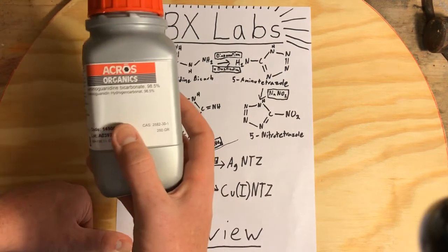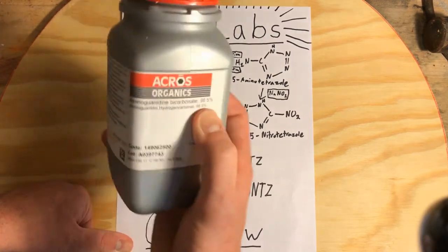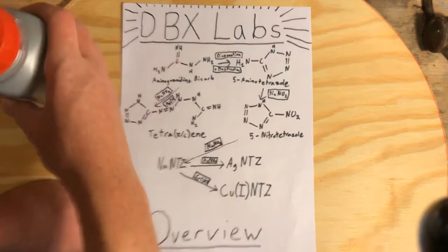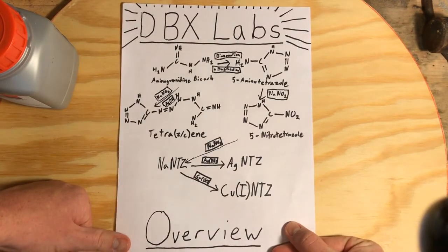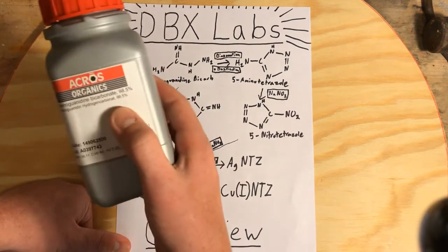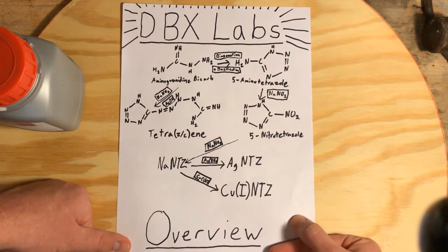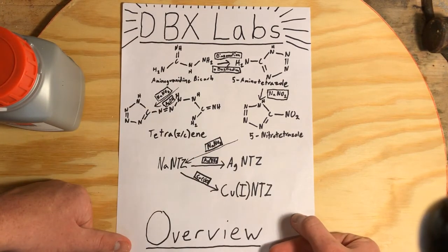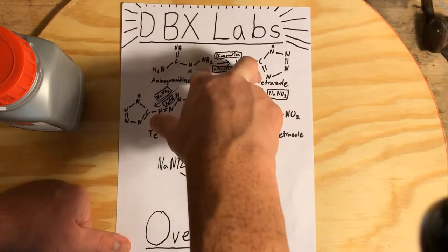The aminoguanidine bicarbonate I'm starting with is 98.5% pure. If you're using aminoguanidine bicarbonate obtained from the Engager over-the-counter route, it might not yield as pure a product. I'm not sure if that's going to impact this synthesis or not, but I do know that this works when the ingredients are pure.